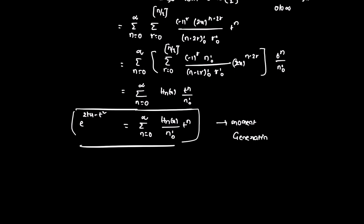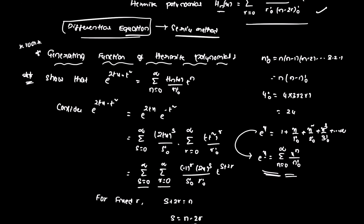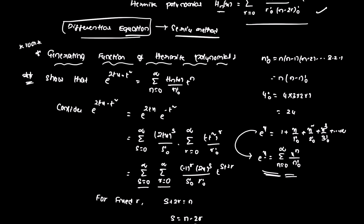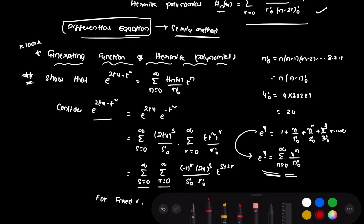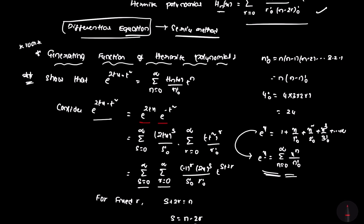This completes the proof of the generating function of Hermite polynomial. We have shown and proved that the generating function of Hermite polynomial is e to the power (2tx minus t squared).